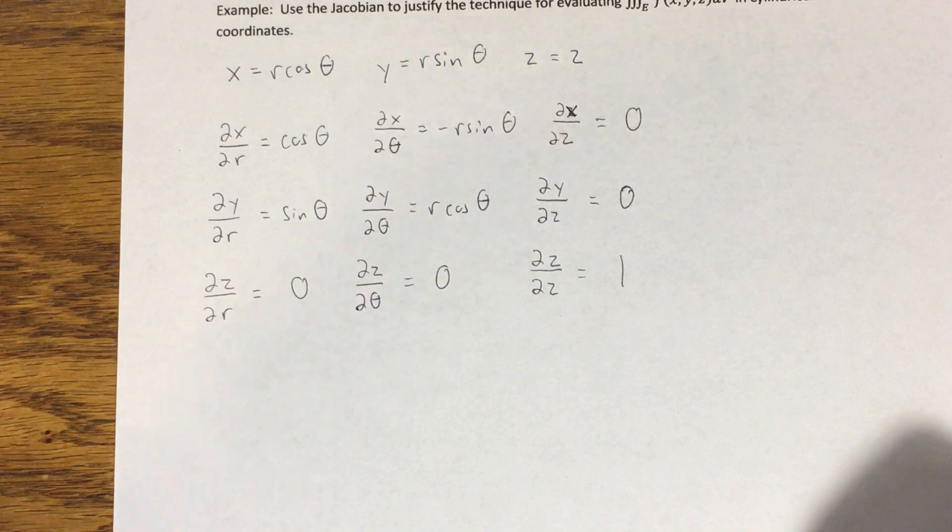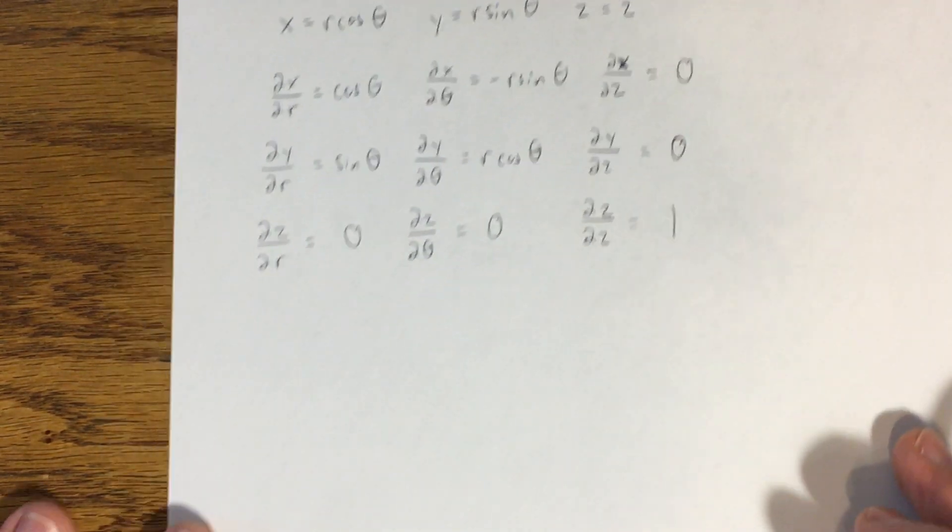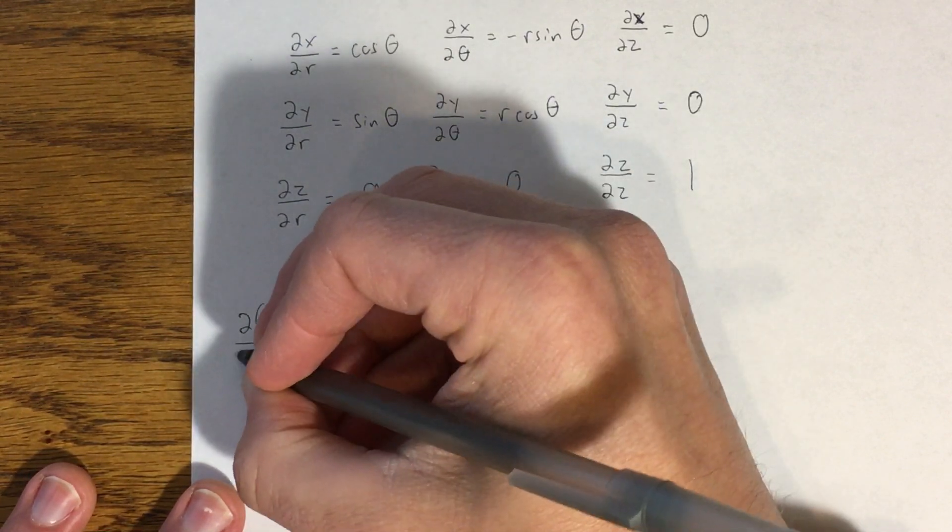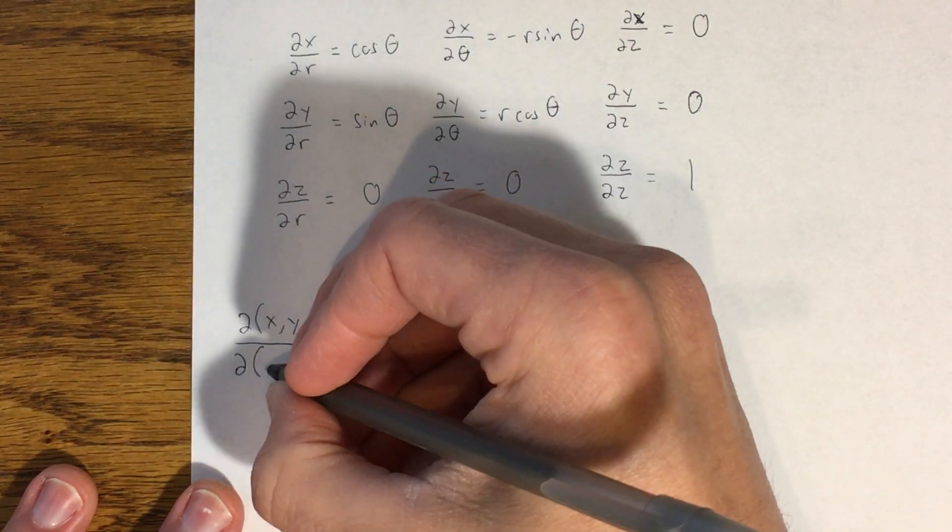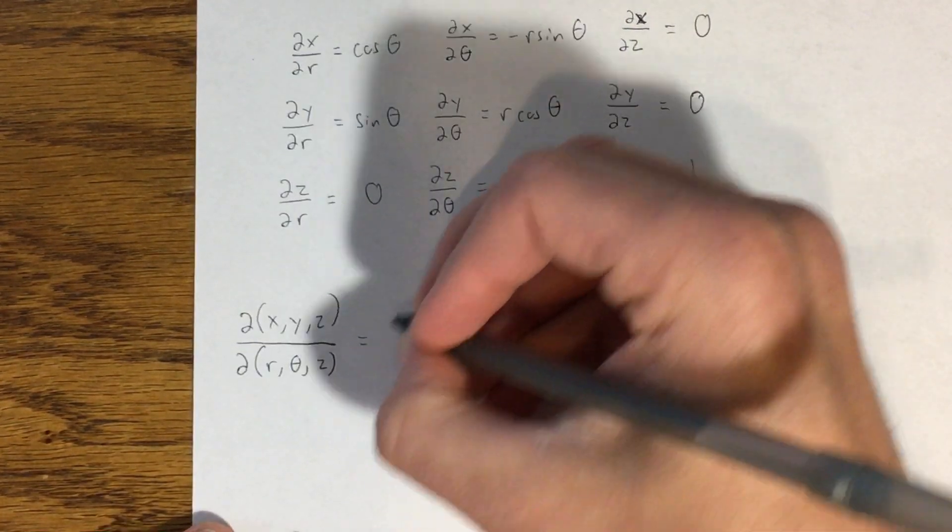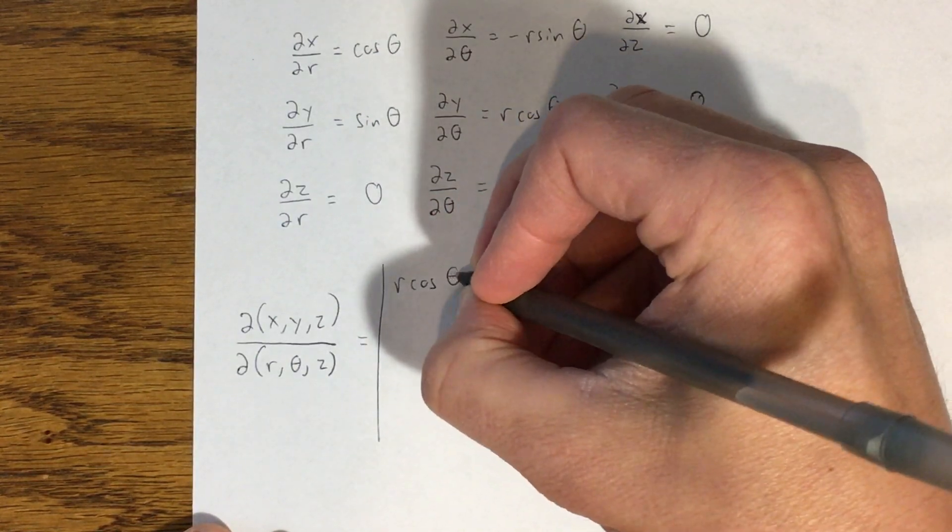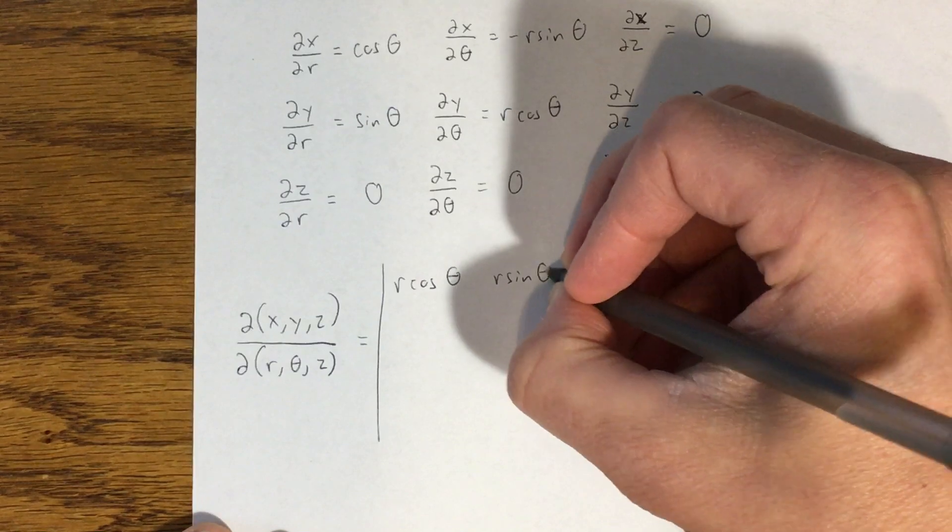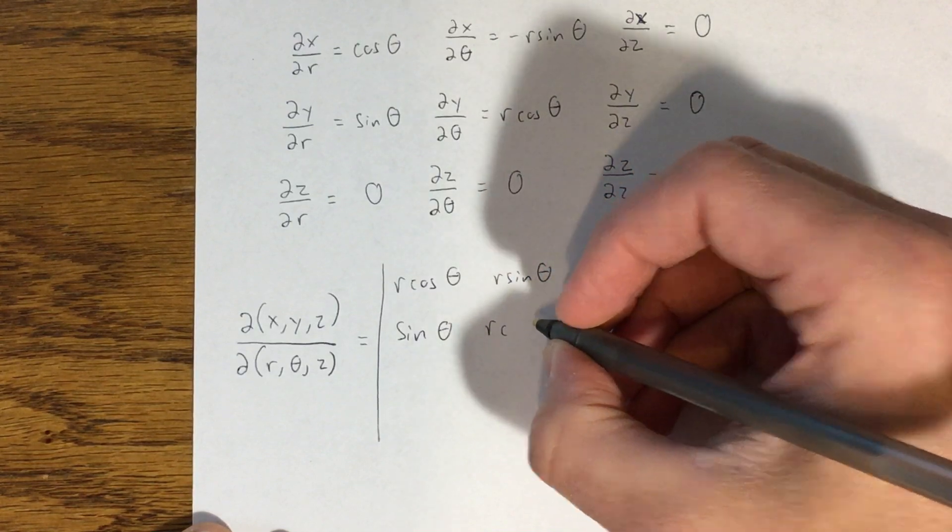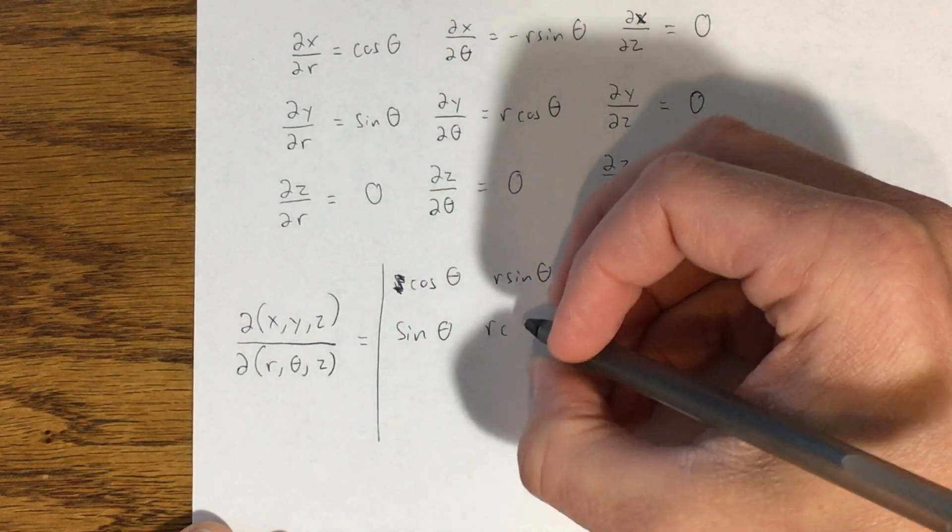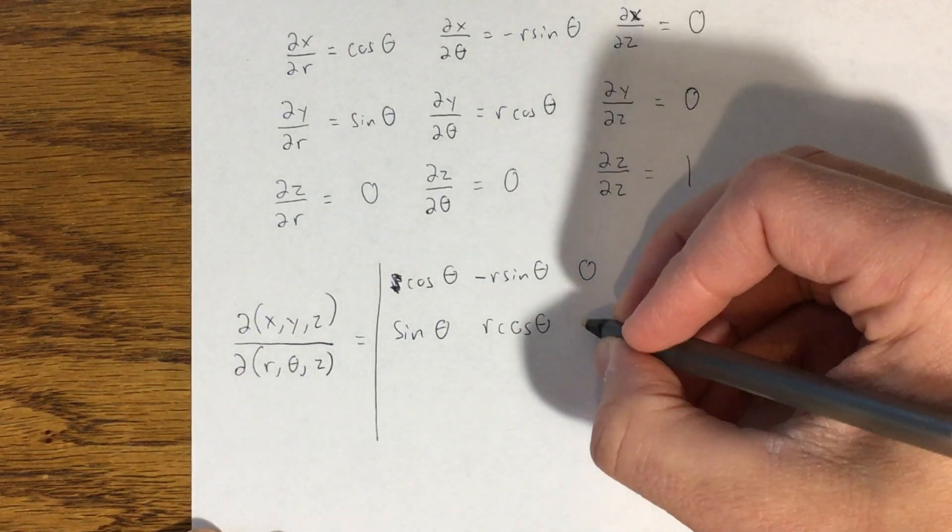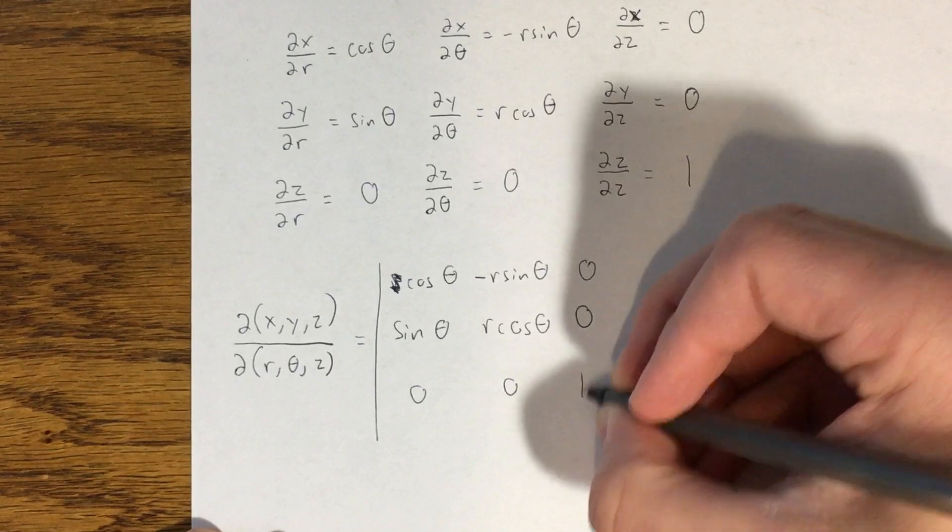So I construct my Jacobian out of these values here. Okay? So let's come here. My Jacobian, this is x, y, z. Down here, instead of u, v, and w, I'm using the names of the variables in cylindrical coordinates, which is r theta z. That's going to look like this, 3 by 3, r cosine of theta, negative r sine of theta, 0, sine of theta, r cosine of theta, 0, and then 0, 0, 1.